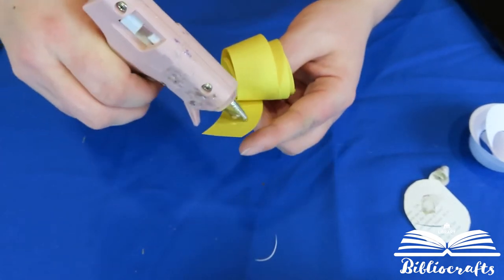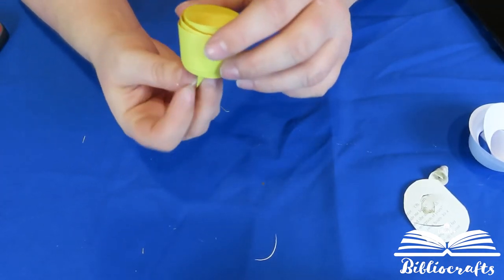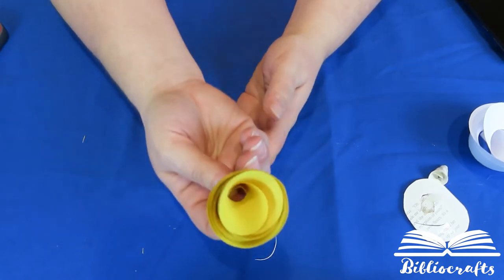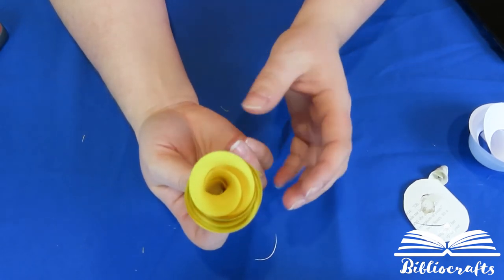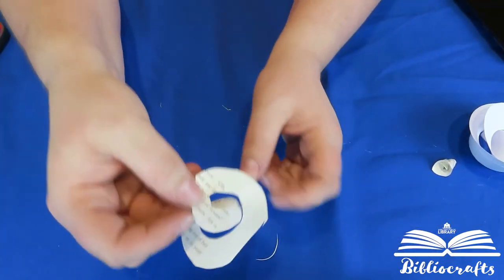And then we'll glue the tail. All right, and so there is our little rosette.